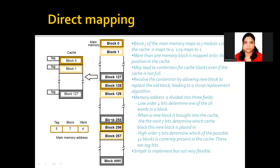Now let me take block number 255. Block number 255 mod 128 gives the same answer: 127. In this case, we have to replace the existing data using a replacement technique and store block number 255 there. Even though other blocks are free, since the answer is 127, we have to replace that block every time. This is the main drawback of direct mapping — even if some blocks are free, the formula forces you to always map to the same block number.